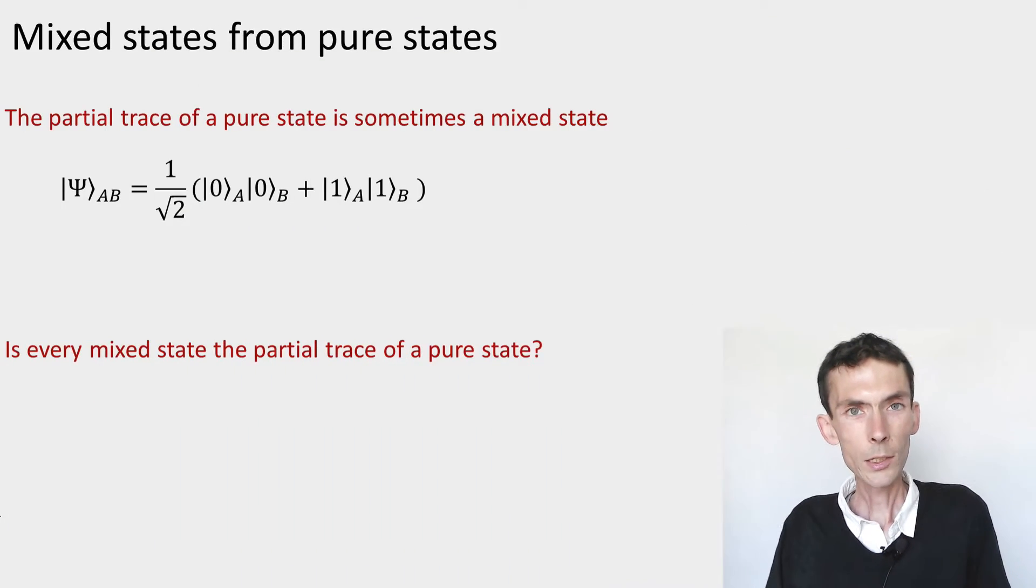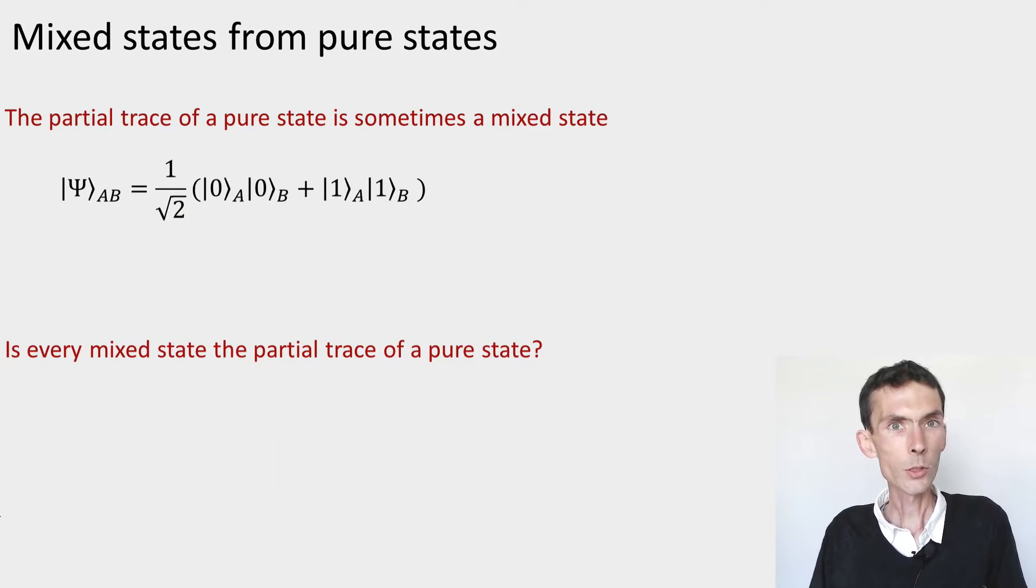So let's see how these purifications work. We've already seen before that density matrices can arise by taking the reduced density. And the sort of prototypical example is, if you start with an entangled state like this psi here, which is initialized in an EPR pair.